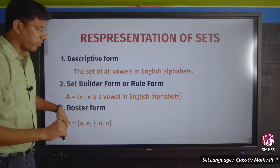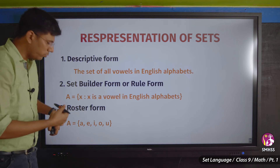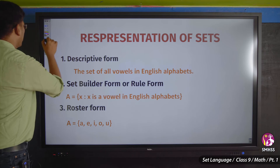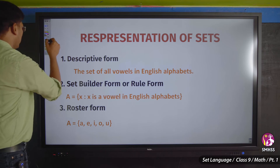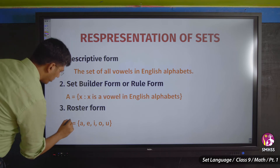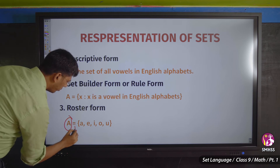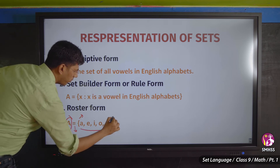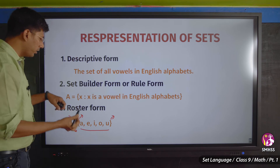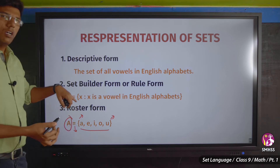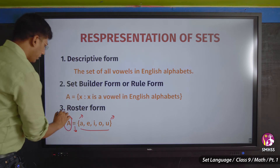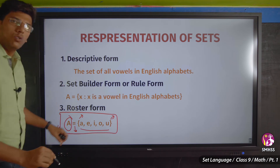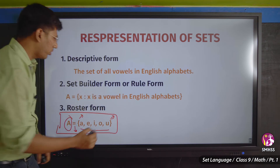The third type is the roster form. This is the form you use most often when solving problems. You write the set name, equals, open brace, then list all the elements, then close brace. For example: A = {1, 2, 3, 4}.